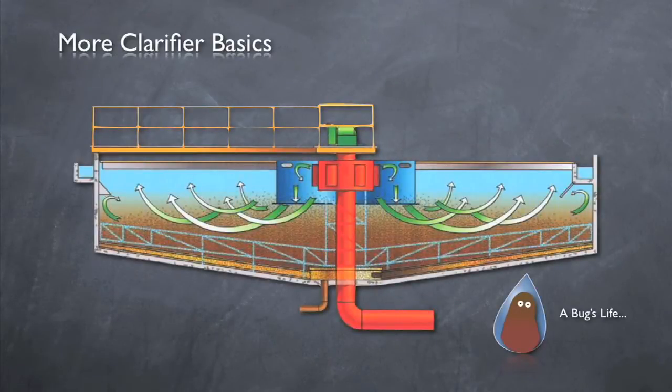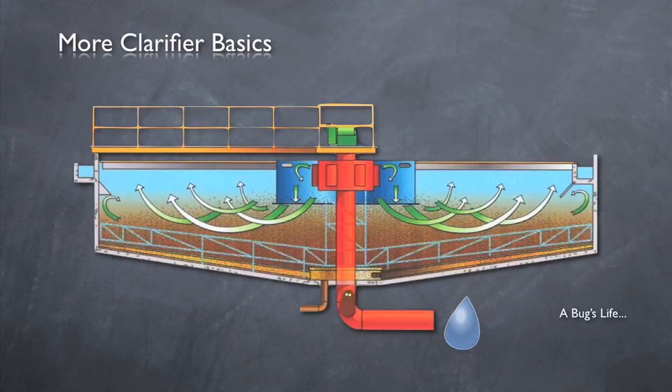To review, particles, represented by our bug here, enter the clarifier suspended in the water. As they enter the clarifier, energy is effectively dissipated, allowing the bug, which is more dense than water, to slowly sink, while the water eventually makes its way to the top of the tank and over the weir.